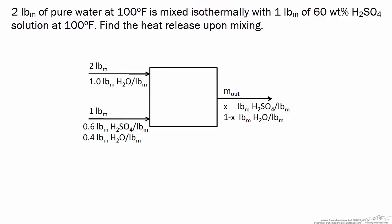In this screencast, we're going to look at an example of an isothermal mixing process and use an enthalpy concentration diagram for H₂SO₄. We have two pounds of pure water at 100 degrees Fahrenheit, mixed isothermally with one pound of 60 weight percent H₂SO₄ solution, also at 100 degrees Fahrenheit. We want to find the heat that's released upon mixing.